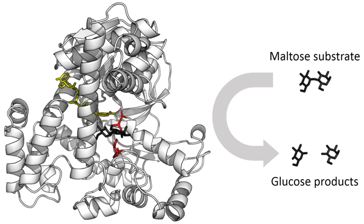Coenzymes are usually continuously regenerated and their concentrations maintained at a steady level inside the cell. For example, NADPH is regenerated through the pentose phosphate pathway and S-adenosylmethionine by methionine adenosyl transferase. This continuous regeneration means that small amounts of coenzymes can be used very intensively. For example, the human body turns over its own weight in ATP each day.